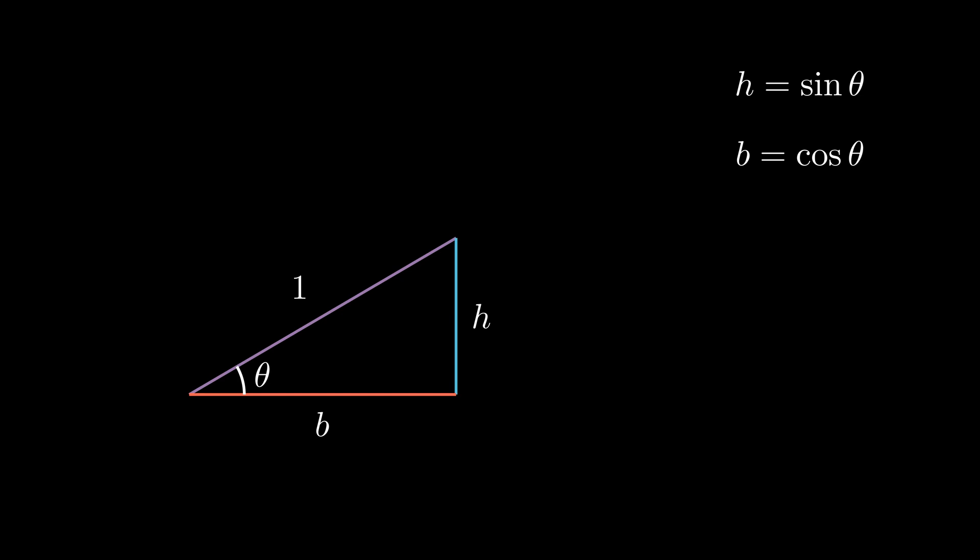This result is particularly intriguing because we have just taken what are generally thought of as ratios between two physical quantities and found them to be physical quantities themselves. And these expressions apply to any triangle with radius 1 across any θ value that we may supply.